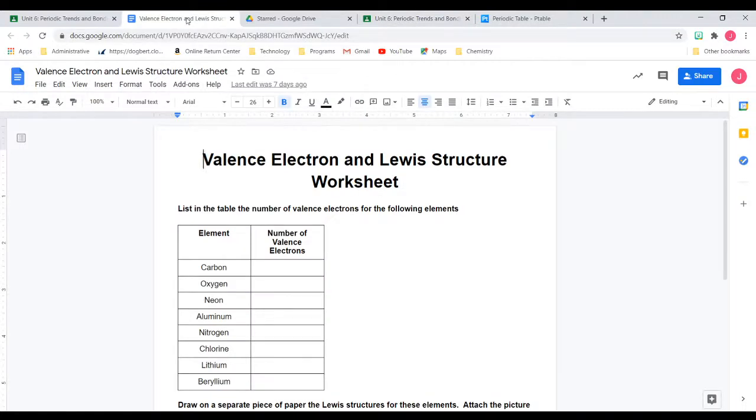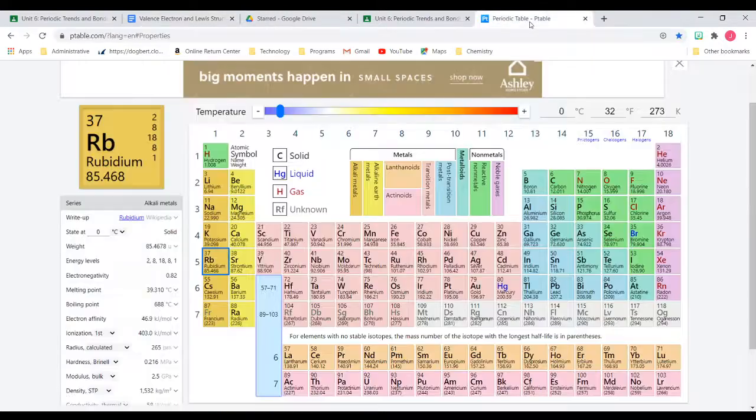Alright, so let's look at it. So the first one, it says list in the table the number of valence electrons for the following elements. Remember, valence electrons are the ones on that outside ring. So the first one it's going to ask me for here is carbon. So I'm going to go over to my periodic table.